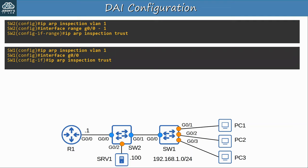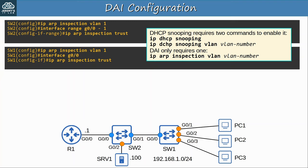I did the same configurations on SW1 but only made its G0/0 interface trusted. You might notice a difference between DHCP snooping and DAI configuration. DHCP requires two commands to enable it — ip dhcp snooping and ip dhcp snooping vlan — so you enable it globally and then per VLAN. DAI is different: you only have to enable it per VLAN with the command ip arp inspection vlan.